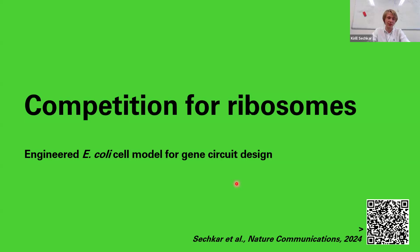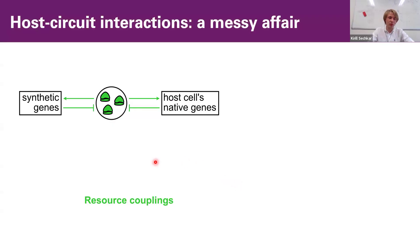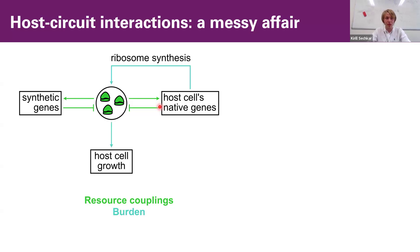Starting with the cell model part of the talk: when we have synthetic genes in the cell, they will compete for shared resources both among themselves and with other native genes already present in the host cell before the synthetic genes were introduced. But that's not all, because ribosomes of the cell are themselves a product of native gene expression. So through this competition, synthetic genes also manipulate the overall ribosome availability.